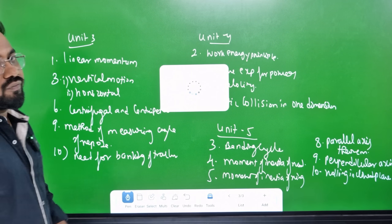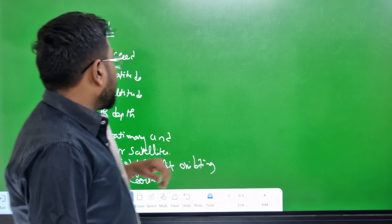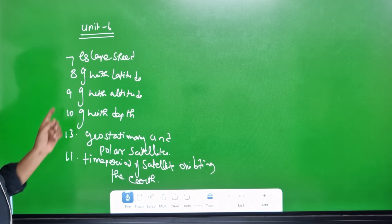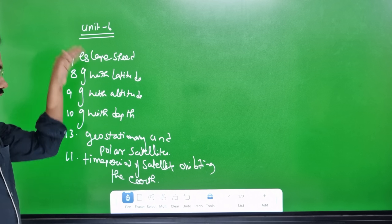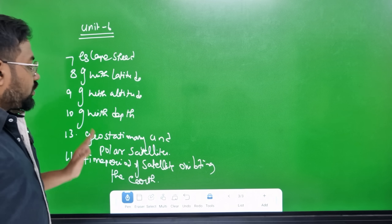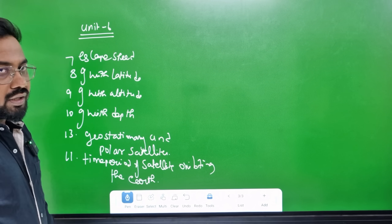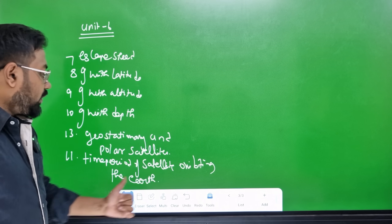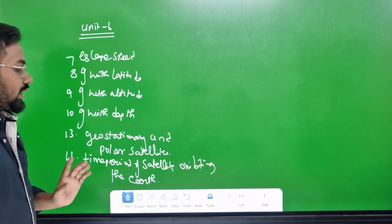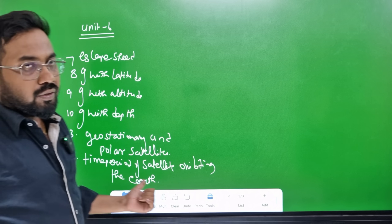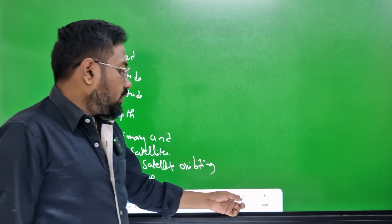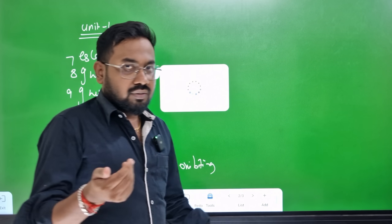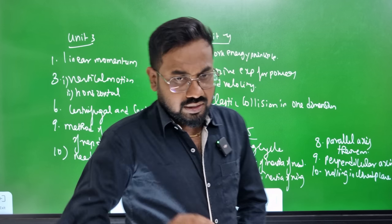Unit 5 is easy, unit 6 is easy. Escape speed, g with latitude, g with depth — this is the 4th question. Geostationary and polar satellites — 3 marks and 5 marks. The 10th question is the time period of a satellite orbiting the Earth. So now you will see these 5 or 6 lessons, around 4 to 5 lessons.